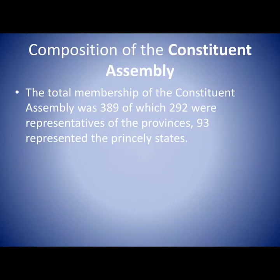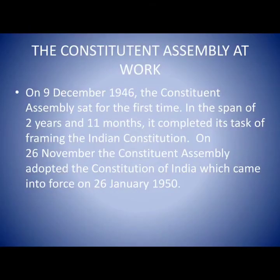Regarding the composition of the Constituent Assembly, the total membership was 389, of which 292 members were representatives of provinces and 93 represented the princely states.